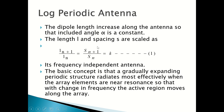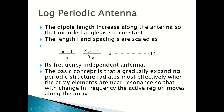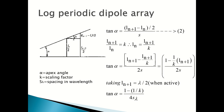The basic concept is that a gradually expanding periodic structure radiates most efficiently when the array elements are near resonance. With change in frequency, the active region moves along the array depending on the length and frequency. The apex angle α (also called the included angle) is derived by considering one element of the log periodic dipole array, where the distance to the element tip is l_n/2, the adjacent element length is l_(n+1)/2, and tan(α) = (l_(n+1) - l_n)/2 divided by spacing s.